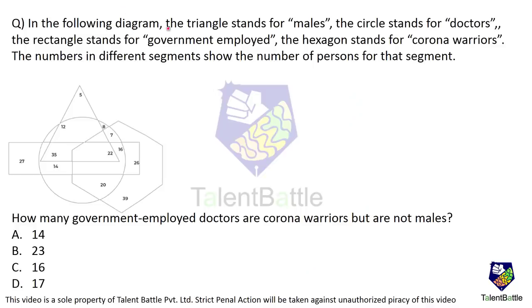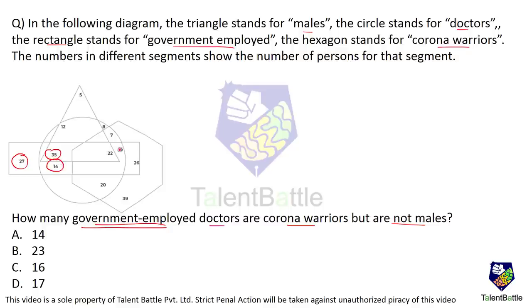In the following diagram, the triangle stands for males, the circle stands for doctors, the rectangle stands for government employed, and the hexagon stands for corona warriors. The numbers in different segments show the number of persons. The question: how many government employed doctors are corona warriors but are not males? First, government employed is denoted by the rectangle, so we will focus only on numbers inside the rectangle.